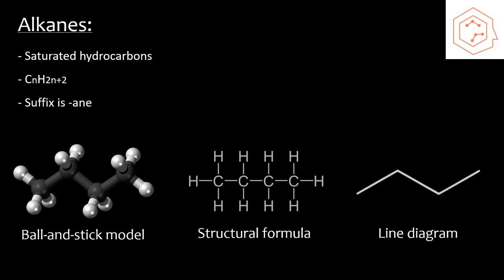Last, we have the line diagram. It is the simplest of the three, where instead of writing out the carbon symbol, we just represent it by the point where each line intersects and the two ends. The bond between carbon and hydrogen is omitted as we already assume that it's there.